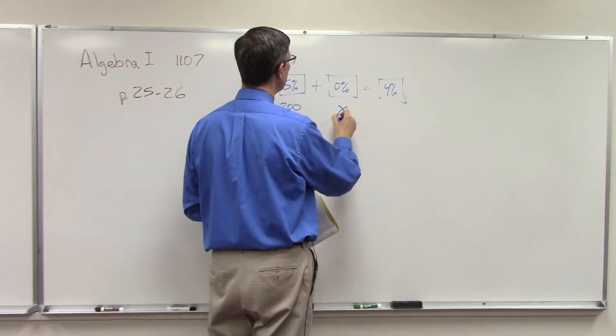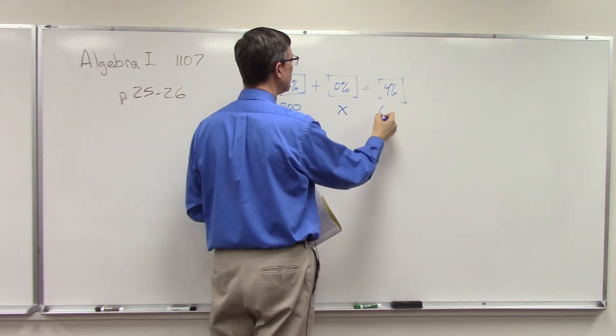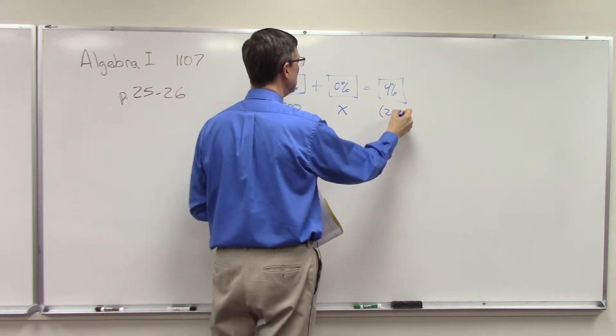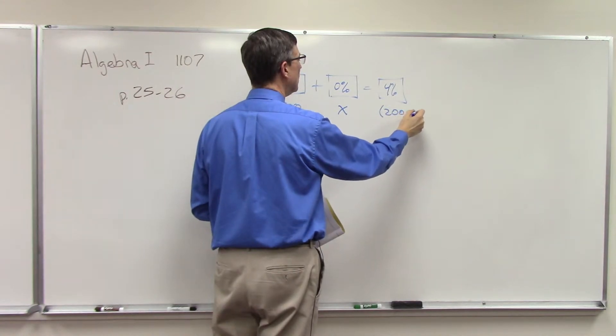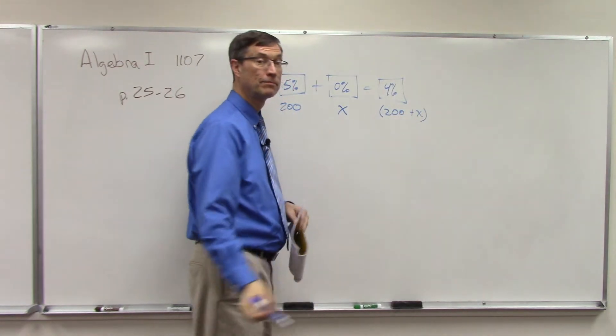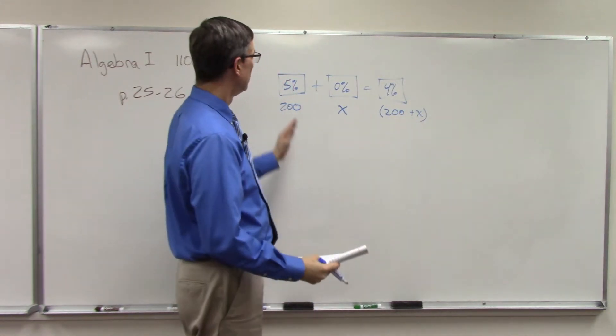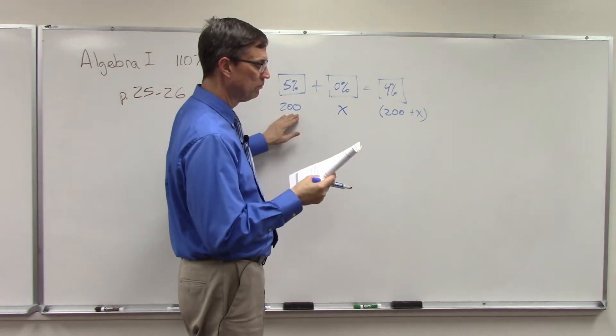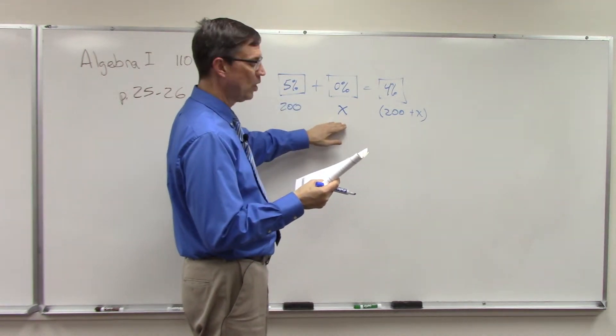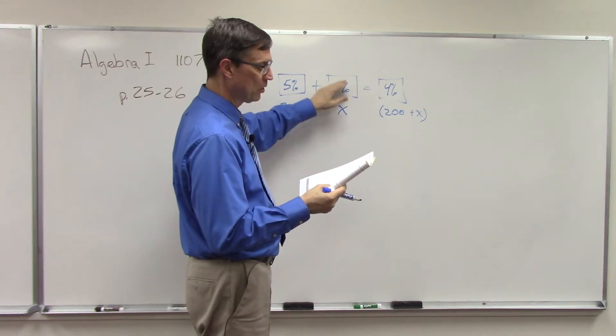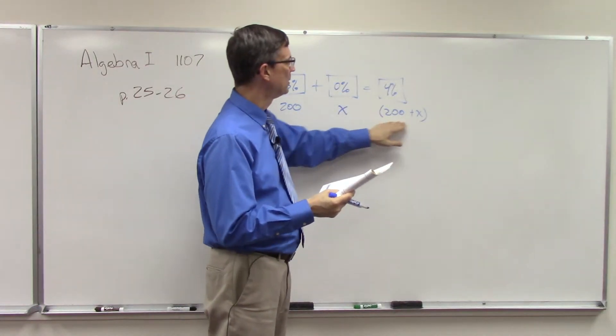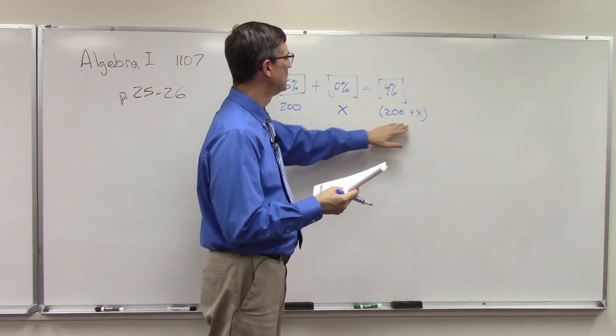We don't know how much we're adding so that's x. So what's the quantity we end up with? 200 plus x. Are you with me? We started with 200 liters at 5%, we don't know how many liters we're adding of skim milk, but we're going to end up with this much, putting these together, this much of the combined at 4%.